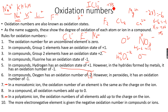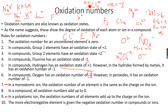The overall charge on the ICl₃ molecule is zero, so the oxidation states of all elements must add up to zero. Chlorine contributes minus 1 times 3, which equals minus 3. If the oxidation number of iodine is x, then x minus 3 equals zero, so x equals plus 3.